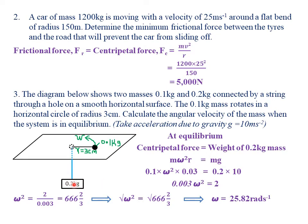Making ω² the subject: ω² = 2 / 0.003 = 666⅔. Taking the square root: ω = √(666⅔) = 25.82 radians per second. Therefore, the angular velocity of the mass when the system is in equilibrium is 25.82 radians per second, correct to four significant figures.